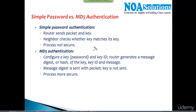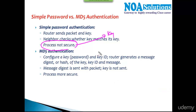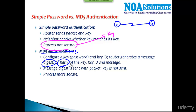The major drawback of simple password authentication is that it is not secure because the password is exchanged in clear text. To overcome this, we can use MD5 authentication. With MD5, the router does not exchange the actual password. Instead, router one sends something called a message digest — a hash value generated based on the key and the key number.